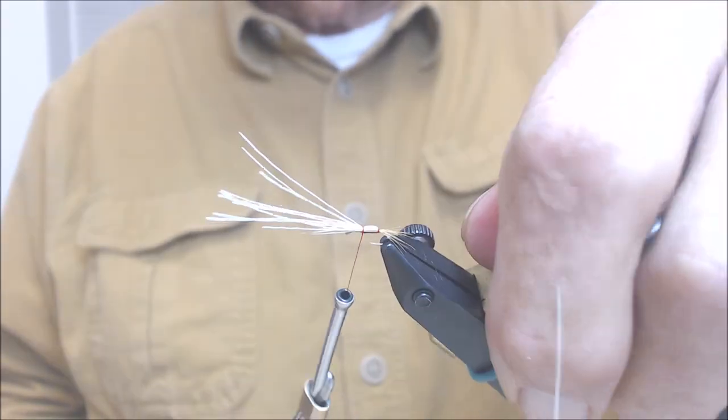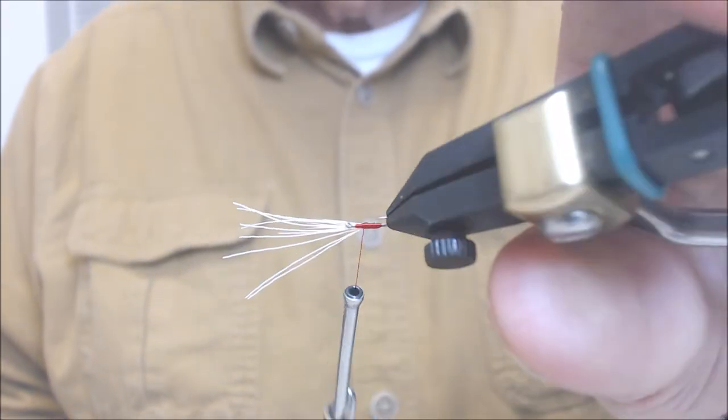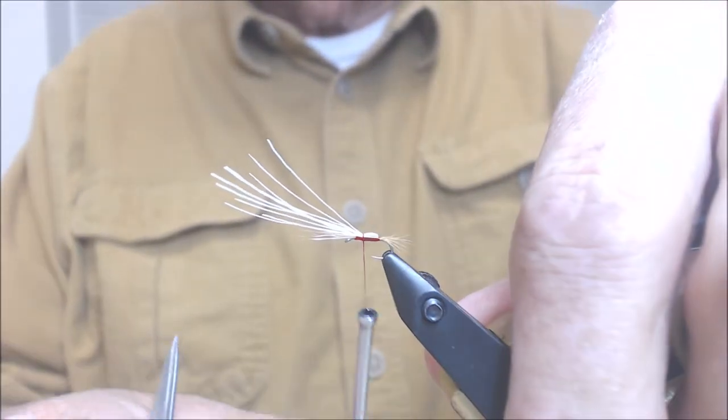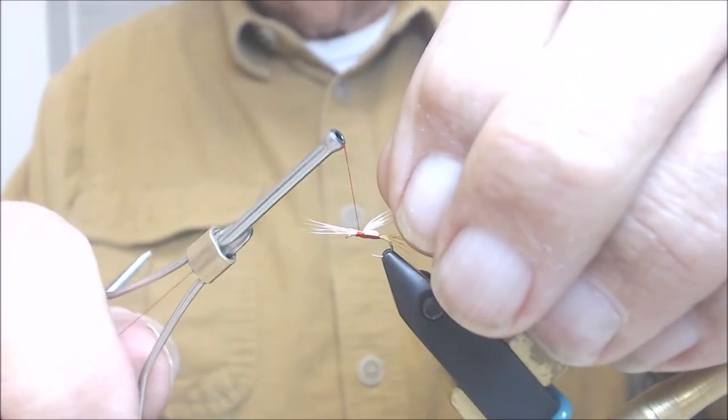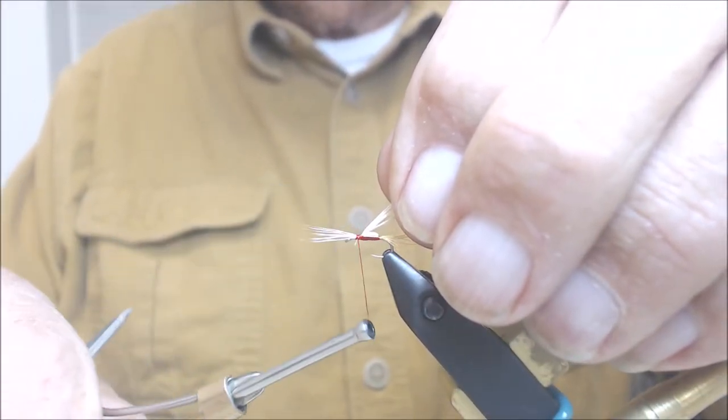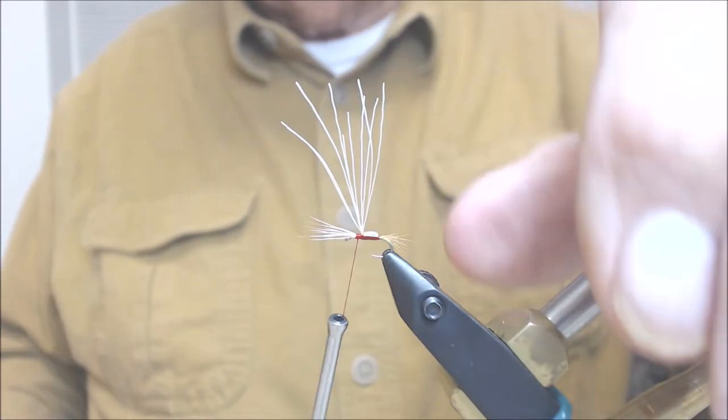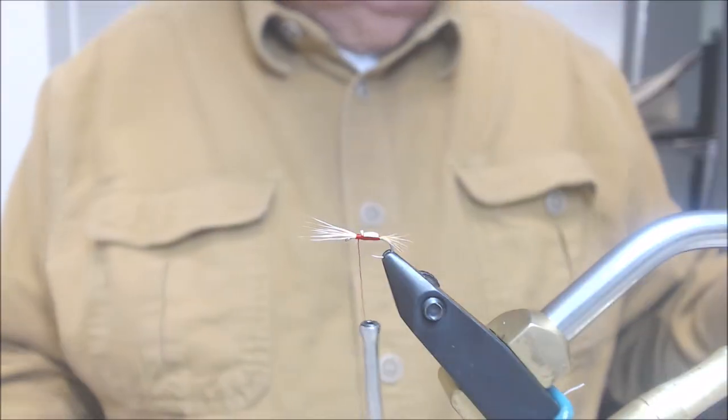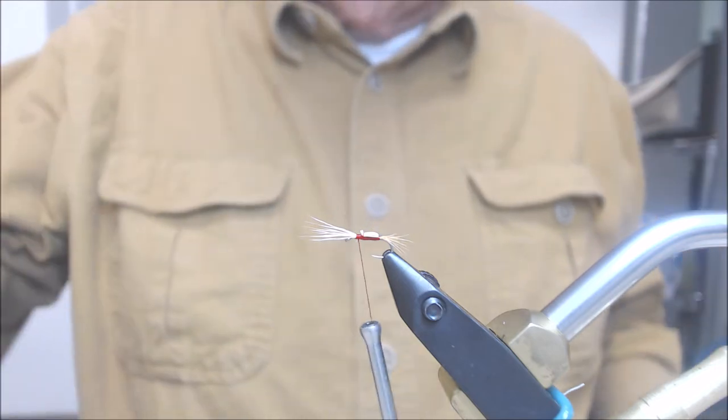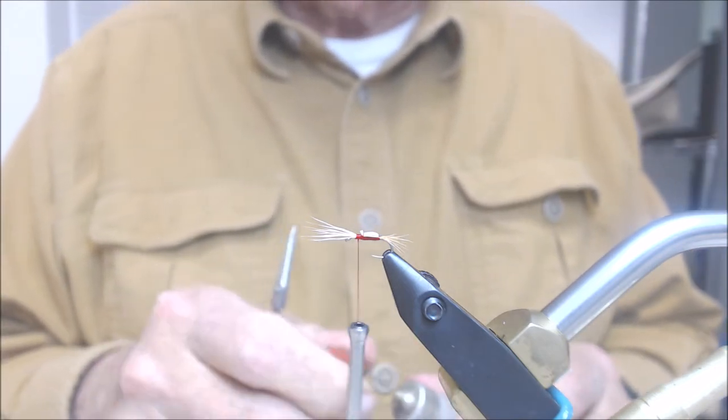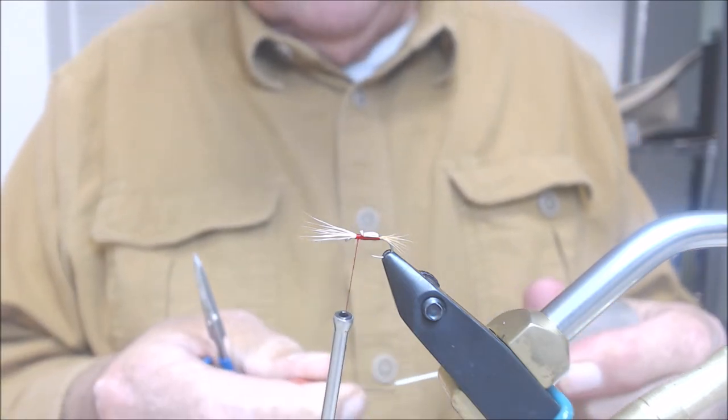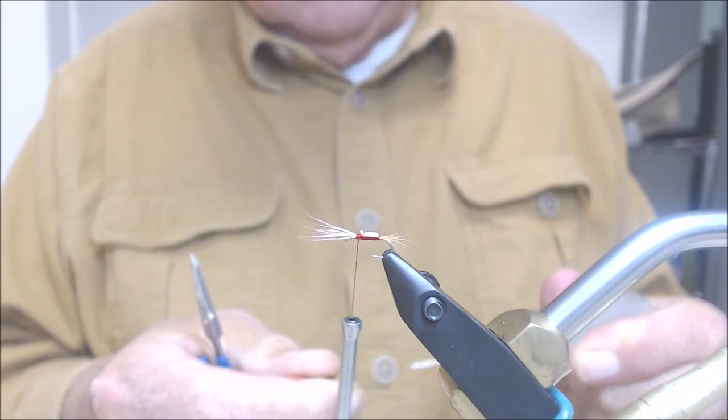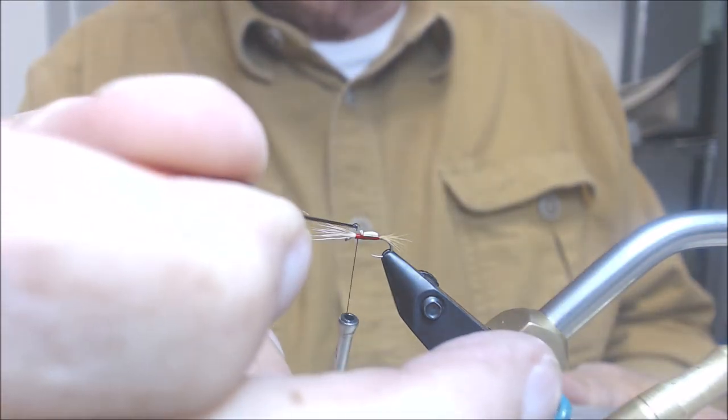I'm going to check to make sure that they haven't slid around, they're not on the bottom of the fly, lift it up, make a couple wraps in front. We'll clip off the deer hair, and just to secure it to make sure it stays in place, take a little dab of the head cement.